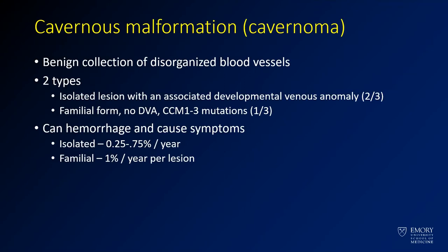Here you have a case of a cavernous malformation, which have been previously referred to as cavernomas. These are benign collections of disorganized blood vessels which occur in the brain. They typically don't show up on angiograms and can be referred to as angiographically occult vascular malformations. There are really two forms: the isolated lesion, often seen with a developmental venous anomaly, and a familial form where patients have more than one cavernous malformation.